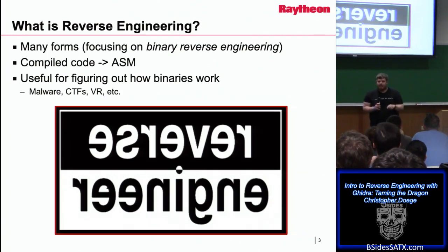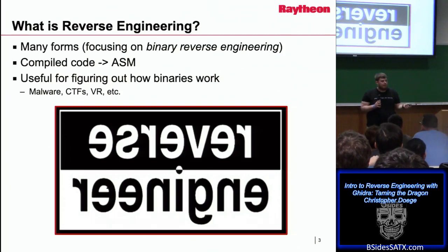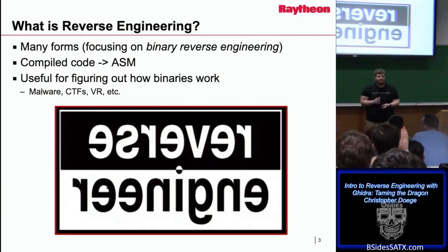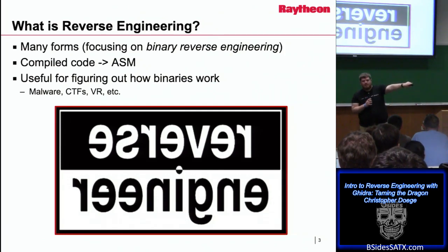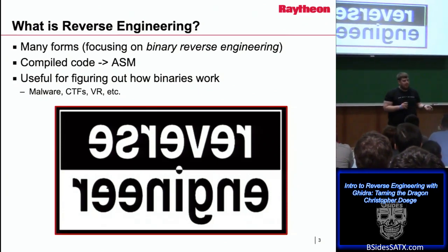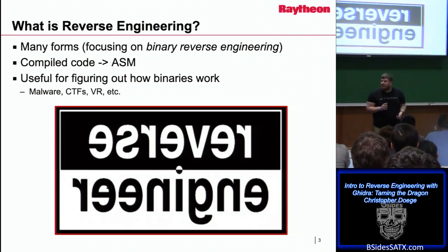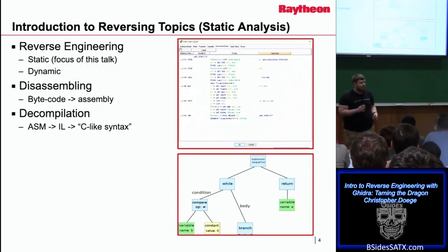With Ghidra, you'll typically see assembly on one side and a C-like syntax on the right. From a show of hands — who's used Ghidra before? Who uses C? Good amount. Who uses IDA? Binary Ninja? Radare2? Okay. Most of the time you see reverse engineering for malware, CTFs, and VR — vulnerability research, not virtual reality — and various other use cases like private firms reverse engineering other software.